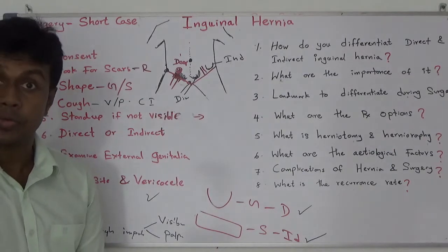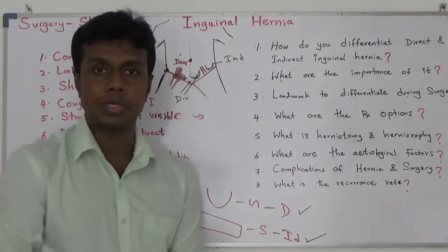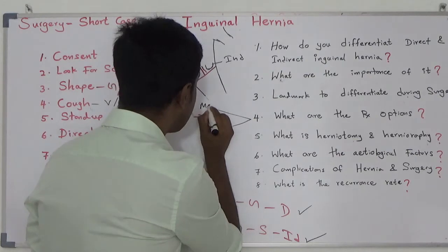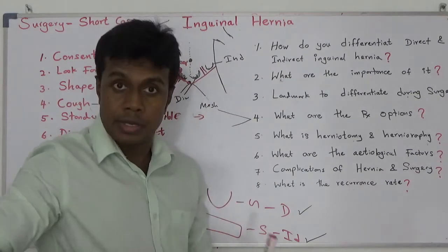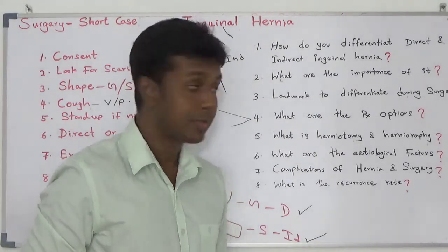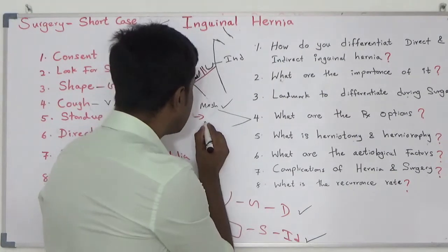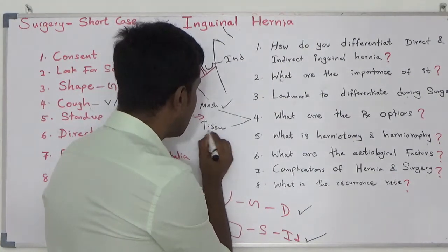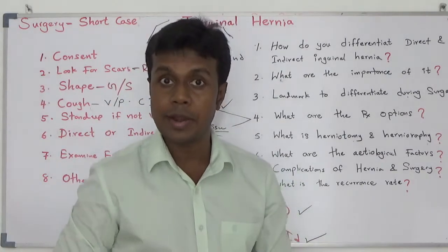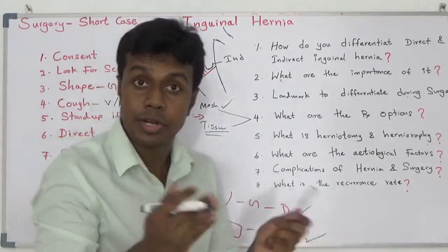That is how you differentiate during surgery. Next: what are the treatment options? You can do mesh repair — reduce the hernia sac and apply mesh over the defect, attaching it to the surrounding tissue. Or you can do tissue repair, where the conjoint tendon is attached to the inguinal ligament. Both mesh repair and tissue repair are options.